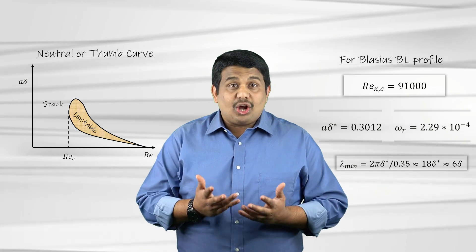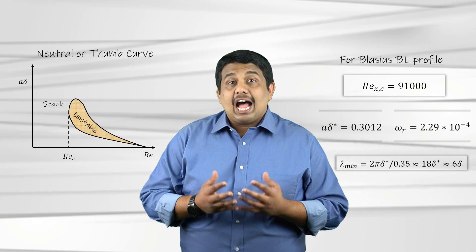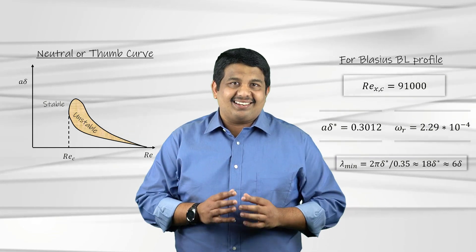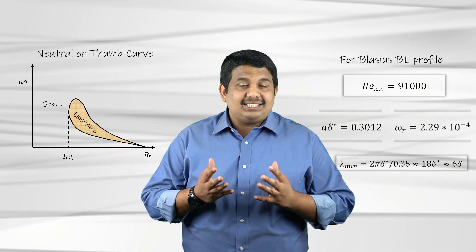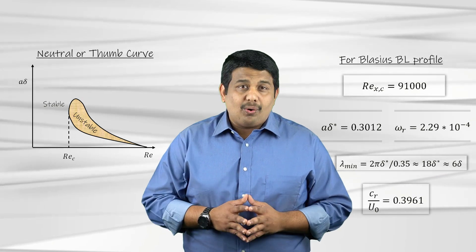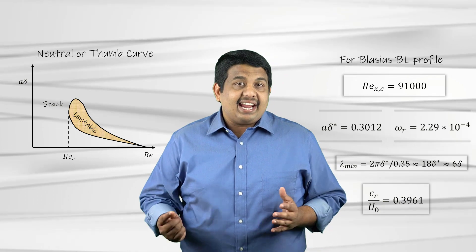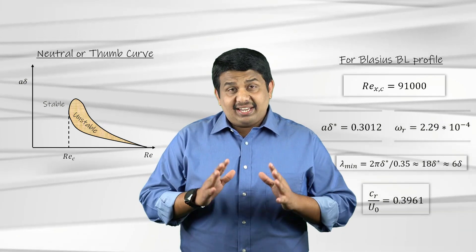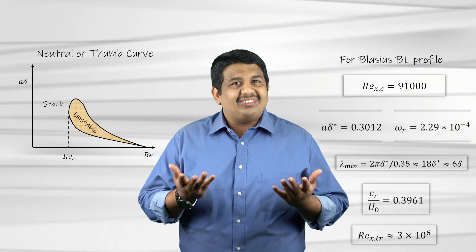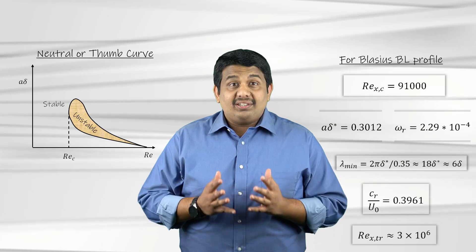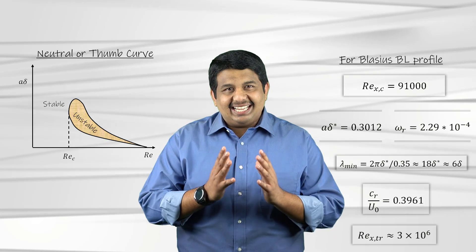The smallest unstable wavelength is around 6 times the thickness of the boundary layer. This implies that the Tollmien-Schlichting waves, which are the natural disturbances in the flow, are long compared to the boundary layer thickness. The maximum phase velocity of these Tollmien-Schlichting waves is around 0.4, which indicates that these waves travel slowly and arise near the wall. Finally, the transition to turbulence occurs at around a Reynolds number of 3 million. This is around 30 times further downstream compared to the location of initial instability.